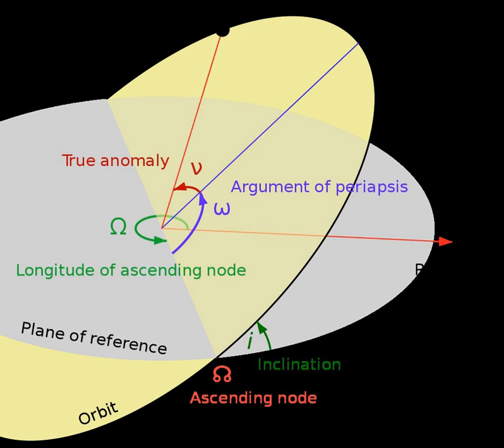The argument of periapsis, also called argument of parafocus or argument of paracenter, symbolized as omega, is one of the orbital elements of an orbiting body.